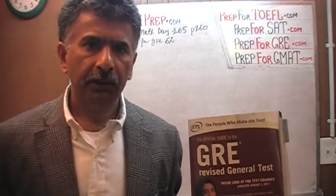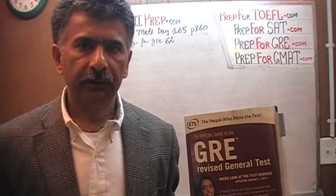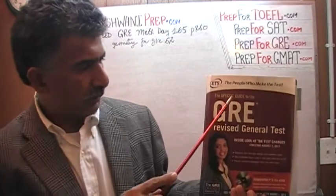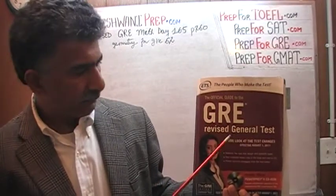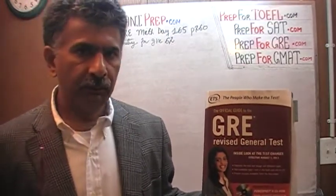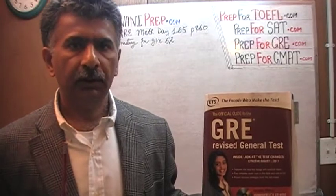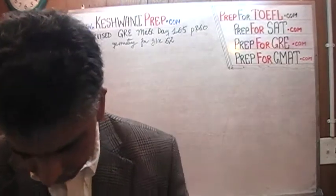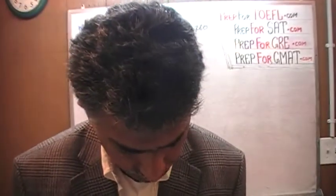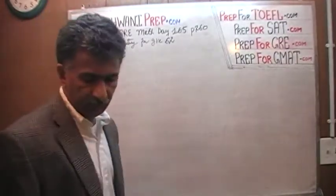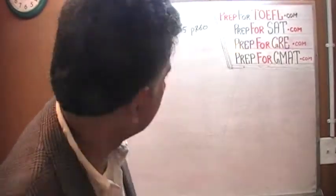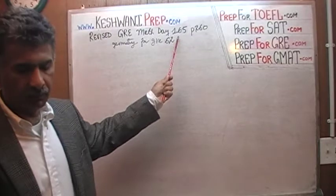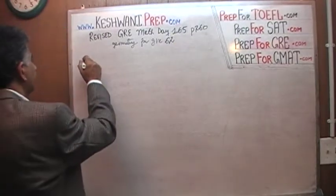We are here because we want to prepare for the GRE. We have been solving GRE math problems out of this book — the Official Guide to the GRE Revised General Test. If you do not own this book already, purchase one immediately; you are going to need it. The problem we are about to solve is on page 260, problem number 4. Today is our lesson number 165.